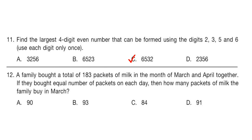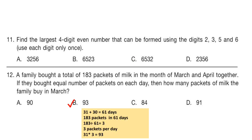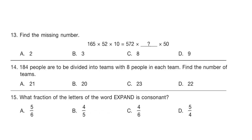Question 12: A family bought a total of 183 packets of milk in the months of March and April together. If they bought an equal number of packets on each day, then how many packets of milk did the family buy in March? March has 31 days and April has 30 days, so 61 days total. In 61 days they bought 183 packets, so divide 183 by 61, which is 3 packets each day. March has 31 days, so 31 × 3 = 93. Option B is the correct answer.